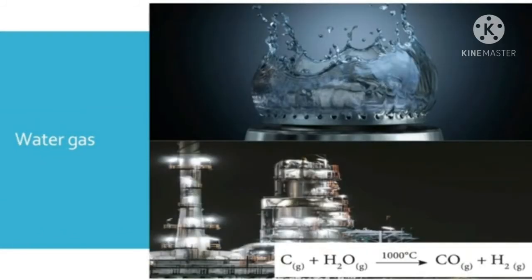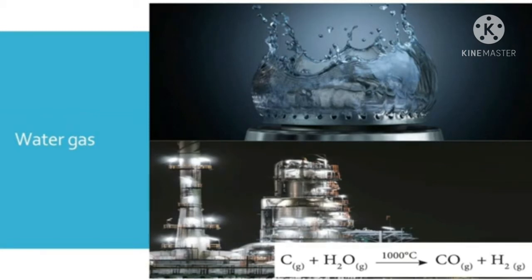Water gas is a gaseous mixture of carbon monoxide and hydrogen. It is made by passing steam over incandescent coke at a temperature of 1,000 degrees Celsius. Carbon plus water at 1,000 degrees Celsius produces carbon monoxide and hydrogen gas. Water gas is also called syngas or synthesis gas as it is used to synthesize methanol and simple hydrocarbons. Water gas is used as an industrial fuel also.